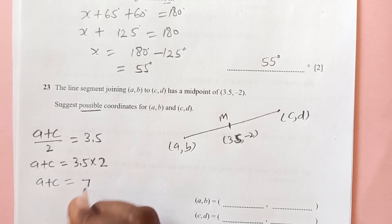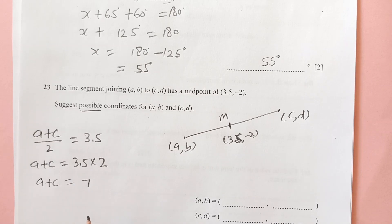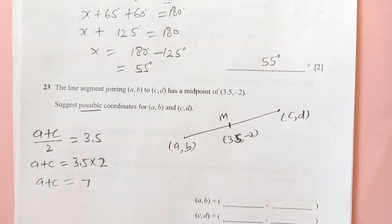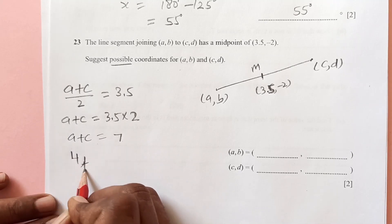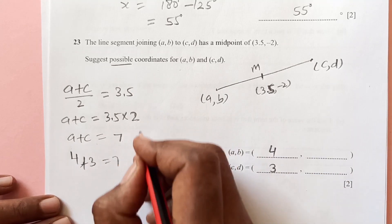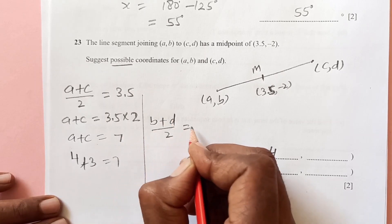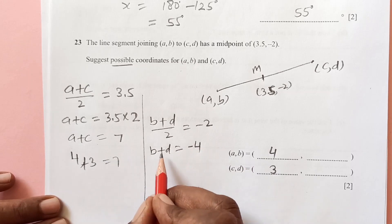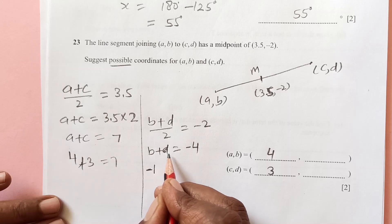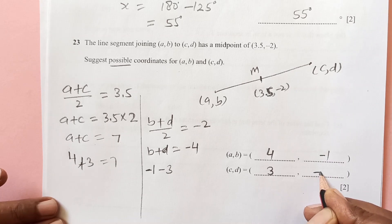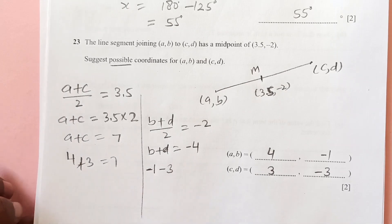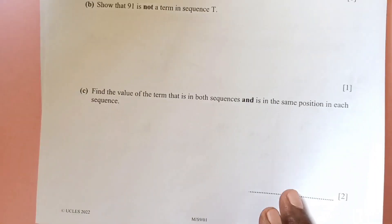So we need two numbers that add to 7, for example 4 and 3. For the y-coordinates, b plus d over 2 equals negative 2, so b plus d must equal negative 4. We can choose any two numbers, like negative 1 and negative 3. So a possible answer is coordinates giving x-sum of 7 and y-sum of negative 4, for example (4, −1) and (3, −3).